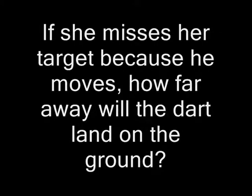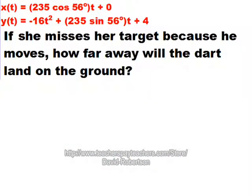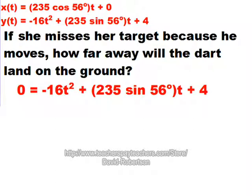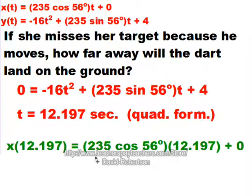If she misses her target because he moves, how far away will the dart land on the ground? Let's find out where this dart lands. First, we know that it's going to end up on the ground, so that tells us that the height must be 0. Therefore, I'm going to use the y equation, and substitute 0 in place of the y of t, because the height is 0 when it's on the ground. Next, I'm going to solve that, and you can see that this is a quadratic. So I'm going to use the quadratic formula, and I do that, and I solve my positive answer being 12.197 seconds. Now that I have this, I'm trying to find out how far away horizontally it's going to go. So, because it's horizontal, I'm going to use the x equation, and instead of that t, I'm going to put 12.197 seconds. I solve that in my calculator, and that gives me 1,602.811 feet.